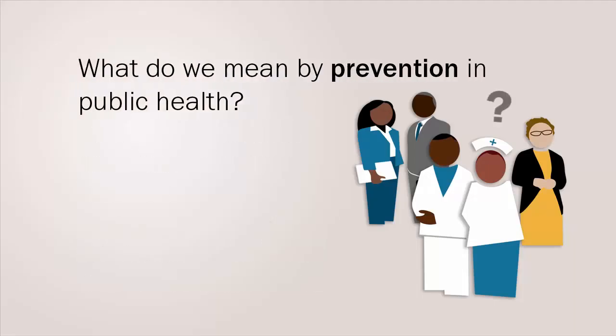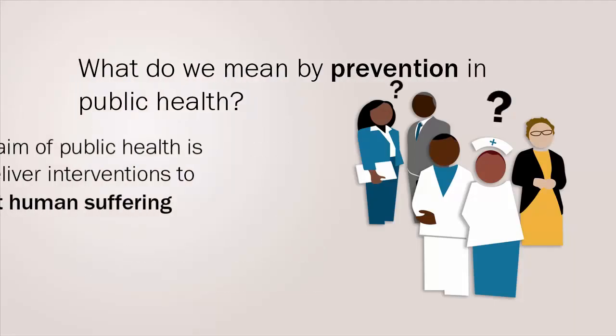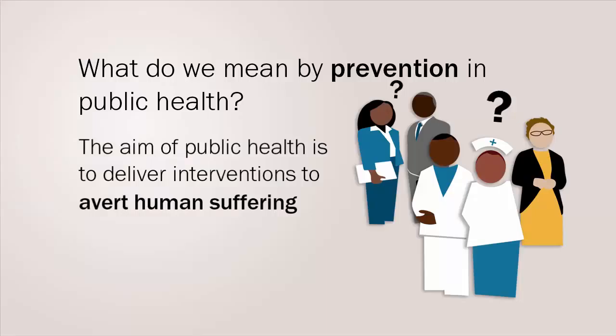What do we mean by prevention in public health? The aim of public health is to deliver interventions to avert human suffering. These control measures are referred to as prevention strategies, and they can be grouped into three levels.